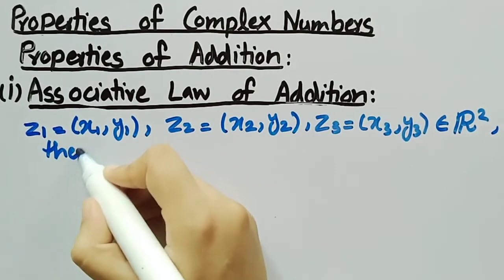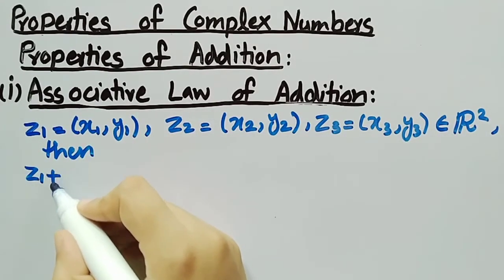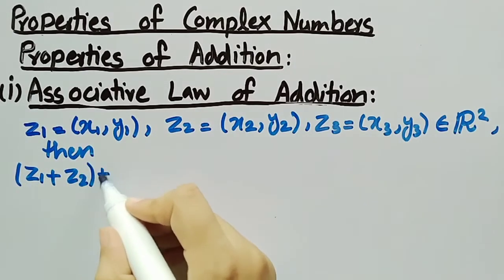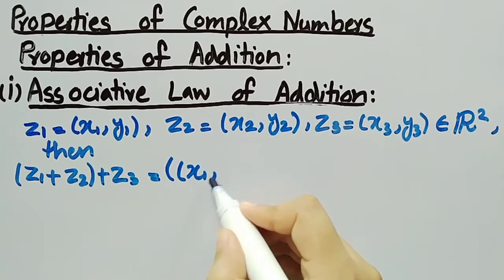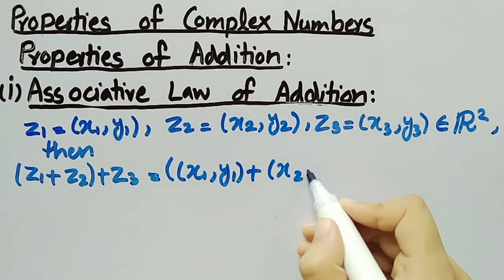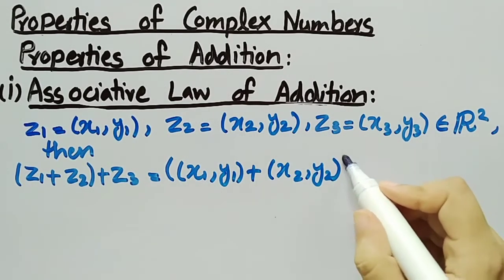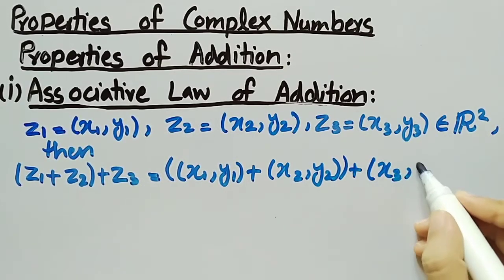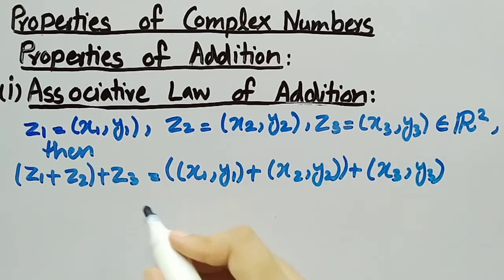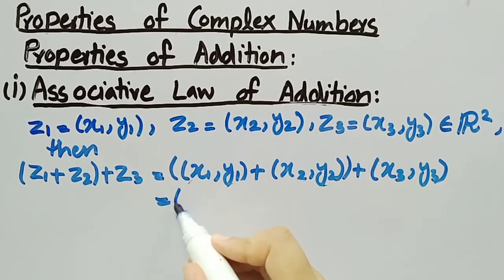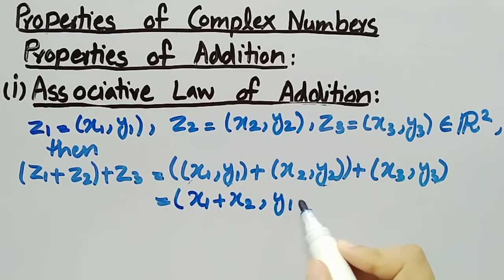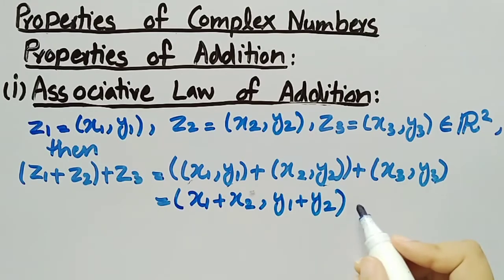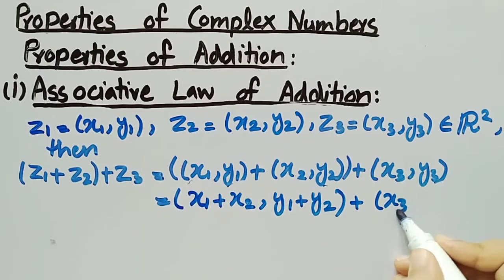Then, Z1 plus (Z2 plus Z3) is equal to (X1, Y1) plus (X2, Y2) plus (X3, Y3), which is equal to (X1 plus X2, Y1 plus Y2) plus (X3, Y3).